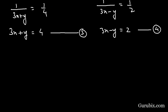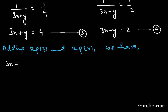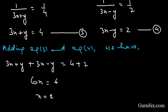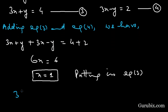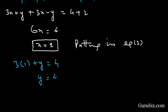We add equation number 3 and equation number 4. Since y and -y cancel out, we get 6x = 6, so x = 1. Substituting x = 1 into equation number 3: 3(1) + y = 4, giving y = 4 - 3 = 1. So the solution is x = 1 and y = 1. Thank you.